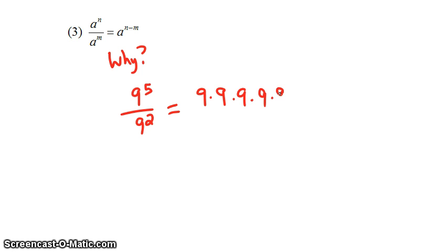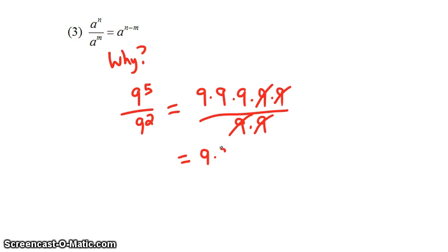But why does the rule work? 9 to the fifth power means this, and 9 squared means this. We can cancel a 9 here with a 9 here, and we can do it again. What we're left with are three 9s — 9 times 9 times 9, or 9 cubed. Why did we subtract 5 minus 2? On the top we have five 9s, but two of those 9s got canceled with the two 9s on the bottom, leaving three 9s on top.